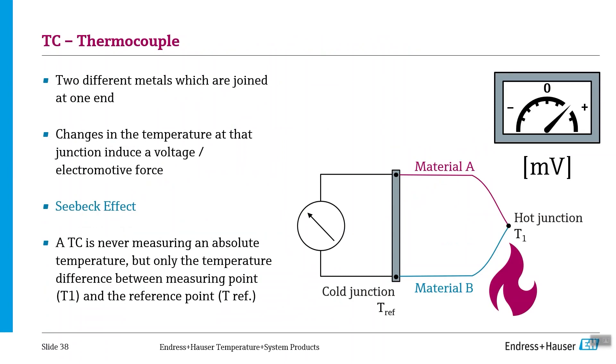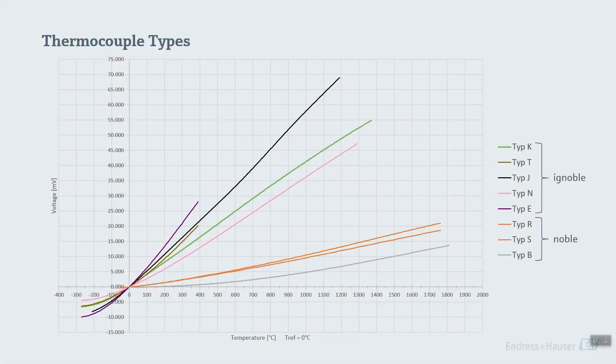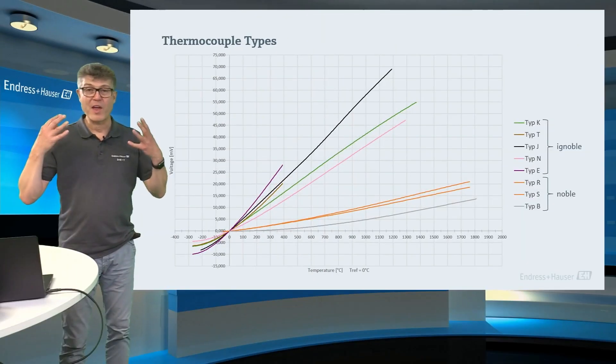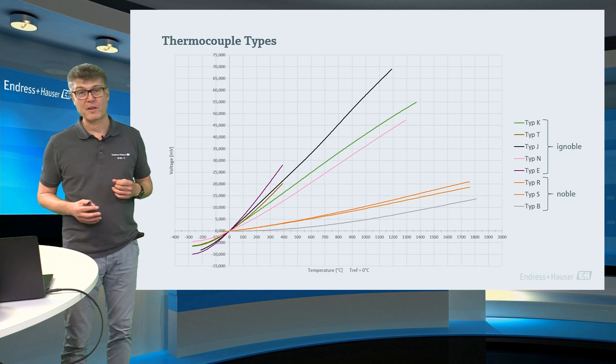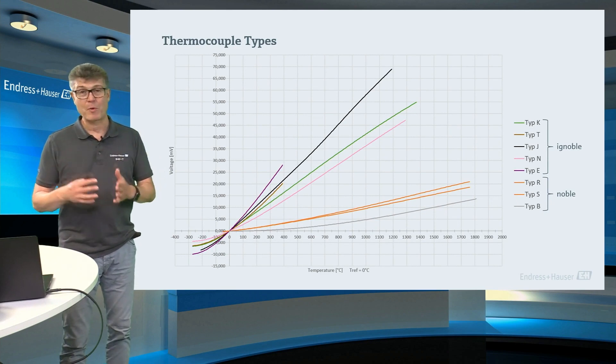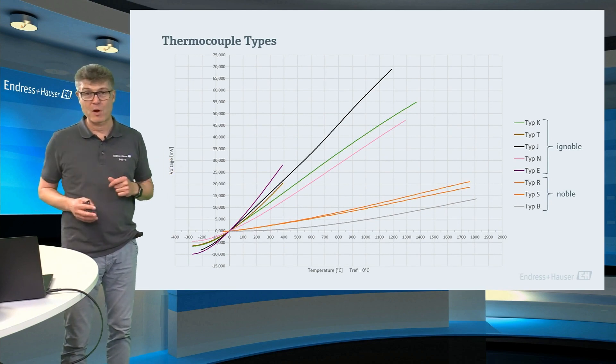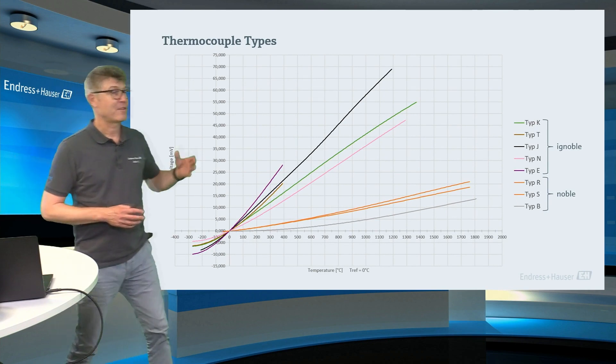The thermocouple voltage is quite small. Microvolts or millivolts. And this needs quite accurate electronic in the temperature transmitter. There are several already standardized thermocouple pairs. So, two different alloys or metals. Let's focus on a few.